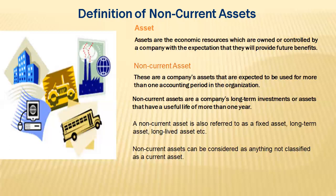A non-current asset is simply an asset that lasts beyond one accounting period. One accounting period refers to 12 months. Any asset that is bought and expected to last for more than one accounting period is referred to as a non-current asset — these are assets that are expected to be used for more than one accounting period in the organization.